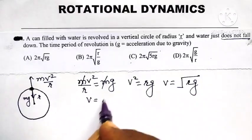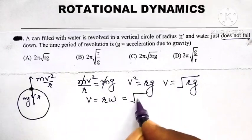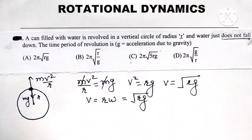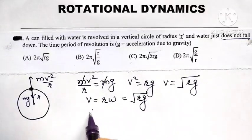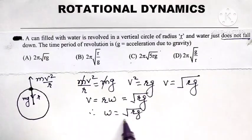But we know v is equal to r omega and that is equal to under root of rg. v is equal to r omega, that is equal to under root of rg. Therefore, omega is equal to under root of rg divided by r.